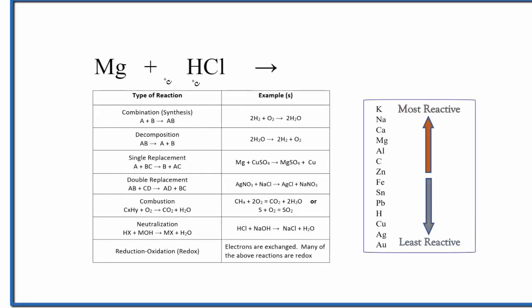In this video, we'll look at the type of reaction for Mg plus HCl. That's magnesium plus hydrochloric acid.